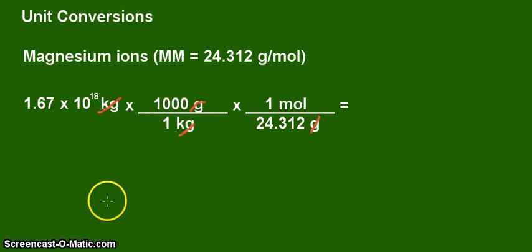So let's do the calculation. And the answer is 6.87 times 10 to the 19 moles of magnesium ions in the Earth's oceans.